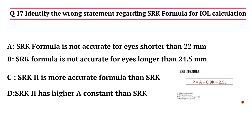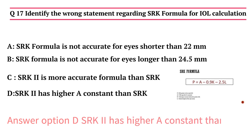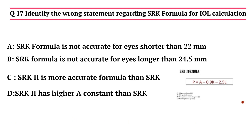Question 17: Identify the wrong statement regarding the SRK formula in IOL calculation. Option A - SRK formula is not accurate for eyes shorter than 22 mm, Option B - SRK formula is not accurate for eyes longer than 24.5 mm, Option C - SRK2 formula is more accurate than SRK, Option D - SRK2 uses higher A constant than SRK. The answer is Option D: SRK2 uses higher A constant than SRK.